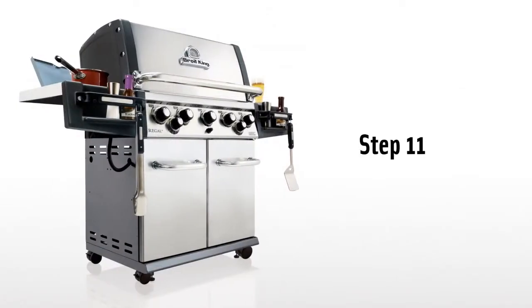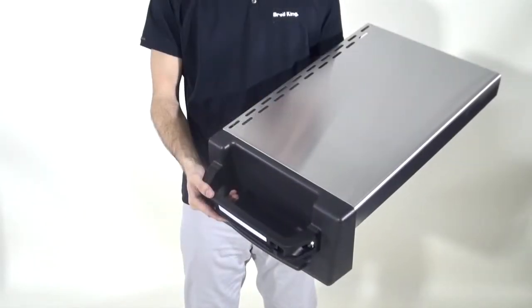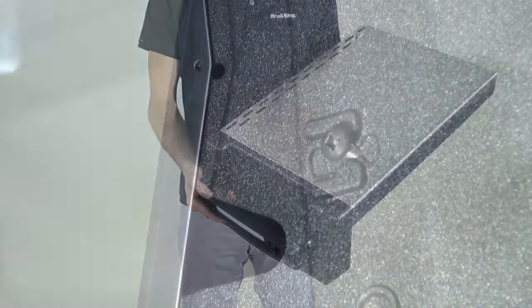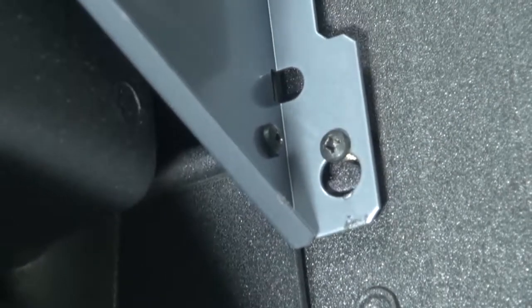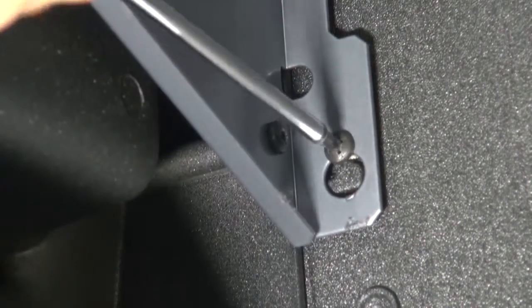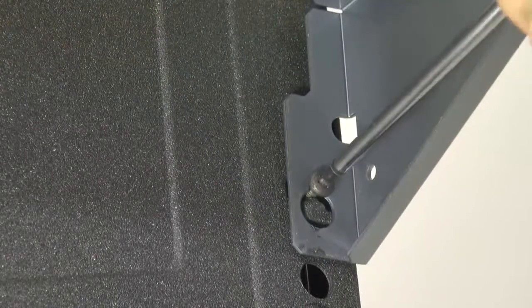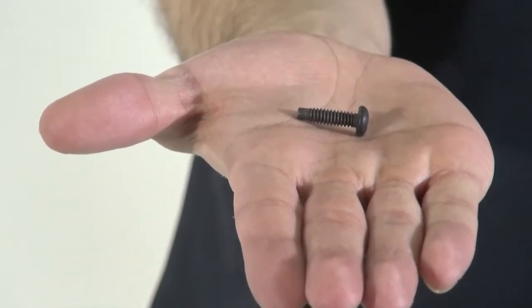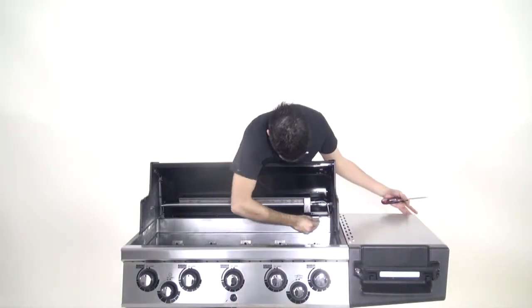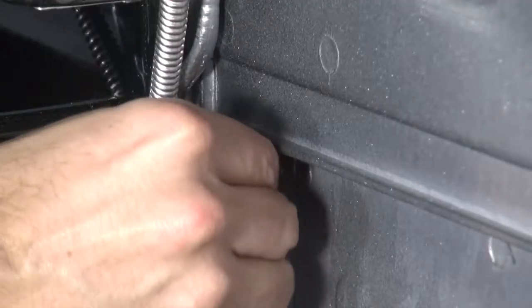Step 11. Install the right hand shelf on your grill. Back off the pre-mounted screws and set the keyhole openings onto those screws. From the inside of the cook box, secure the shelf using the screws provided. Fasten the rear opening through the cook box first, then the front.